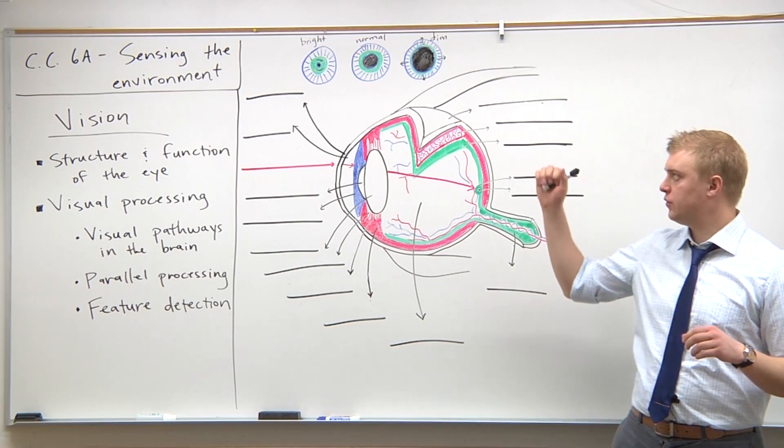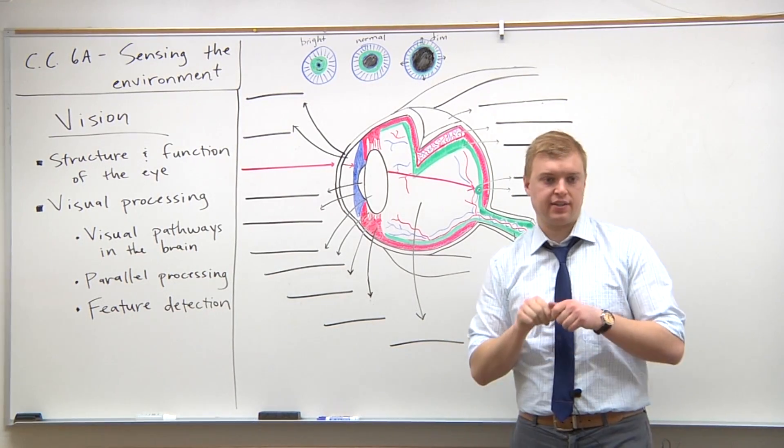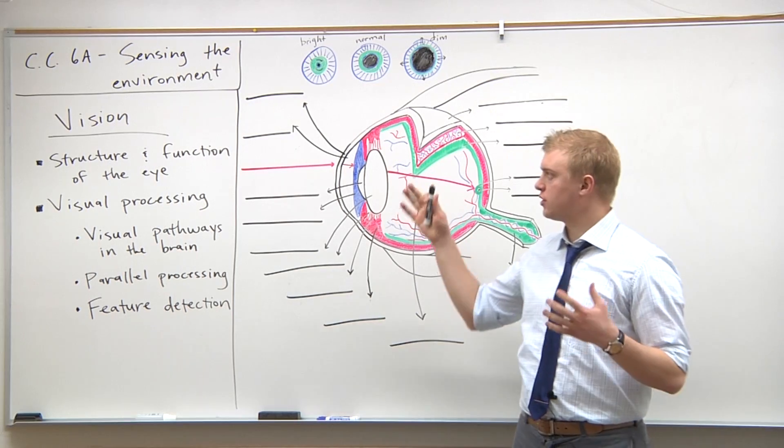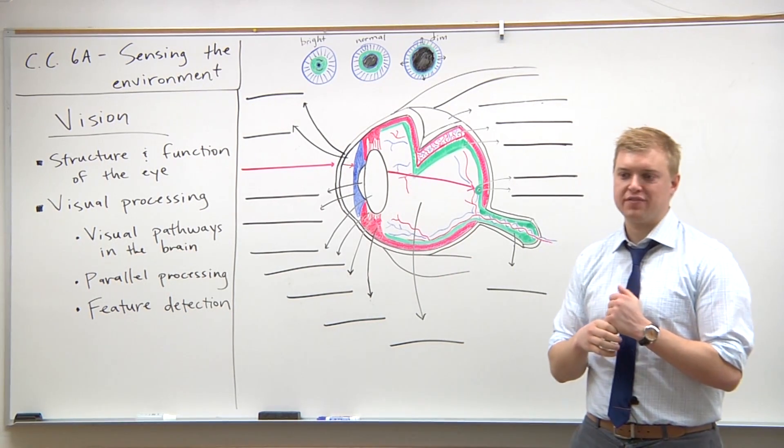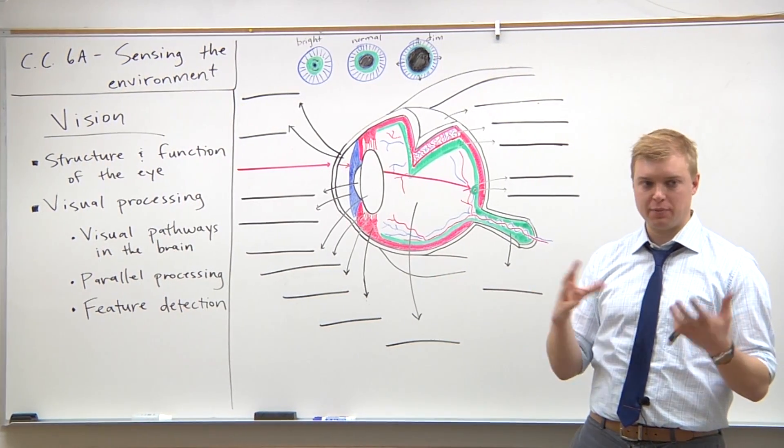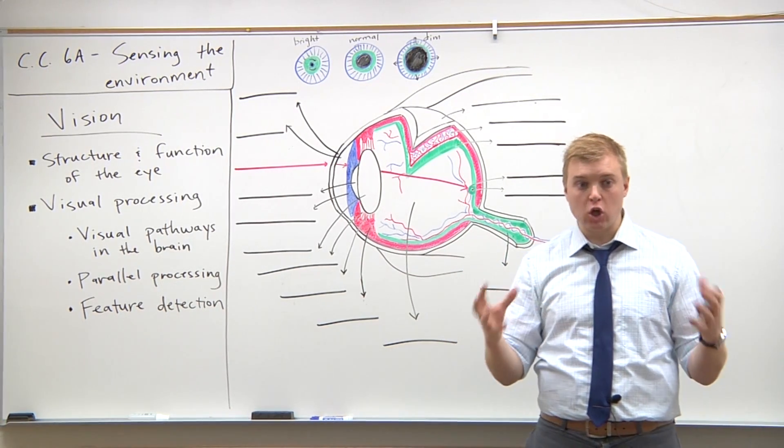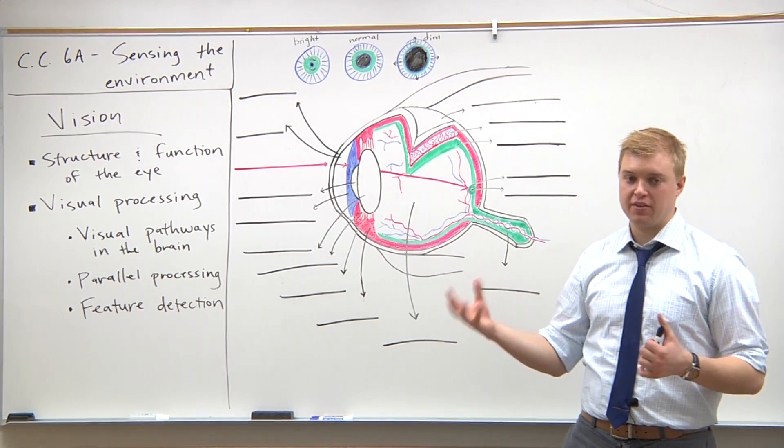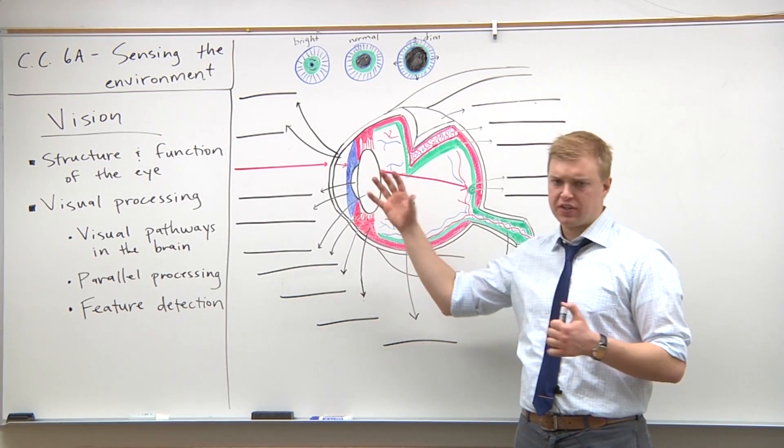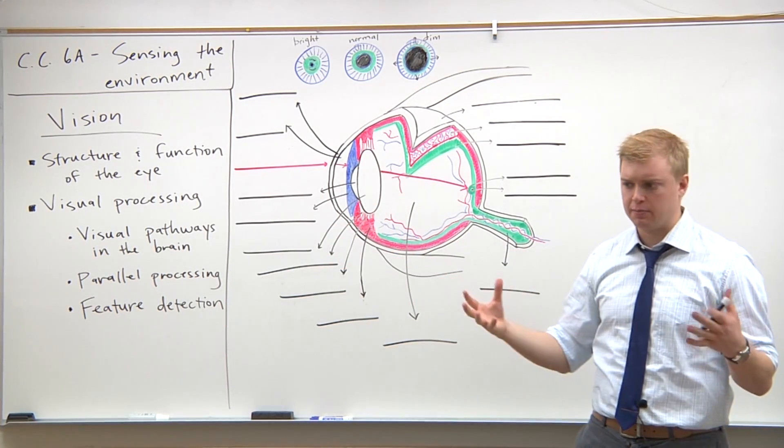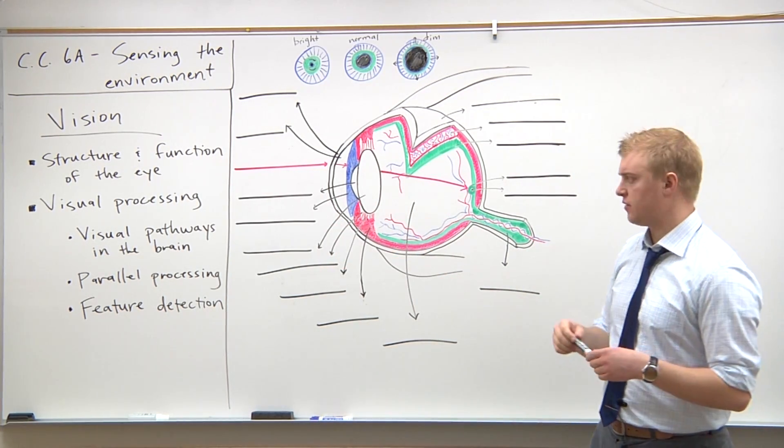Today we're continuing with content category 6A, sensing the environment, and we're going to have a discussion on vision. I've always found vision super interesting, particularly because it is the only sense to which an entire lobe of the brain, the occipital lobe, is dedicated. Vision is very important for our sensory system and allows us to interact and relate with our environment.